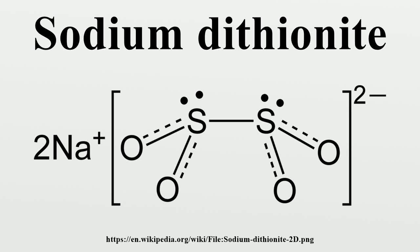Sodium dithionite is a white crystalline powder with a weak sulfurous odor. It is the sodium salt of dithionous acid. Although it is stable under most conditions, it will decompose in hot water and in acid solutions. It can be obtained from sodium bisulfite by the following reaction.